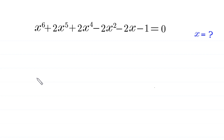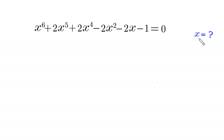Hello everyone, you are welcome to how to solve this very nice 6 degree equation: x to the power 6 plus 2x to the power 5 plus 2x to the power 4 minus 2x squared minus 2x minus 1 is equal to 0. Our job is to find all possible values of x. So let's start.